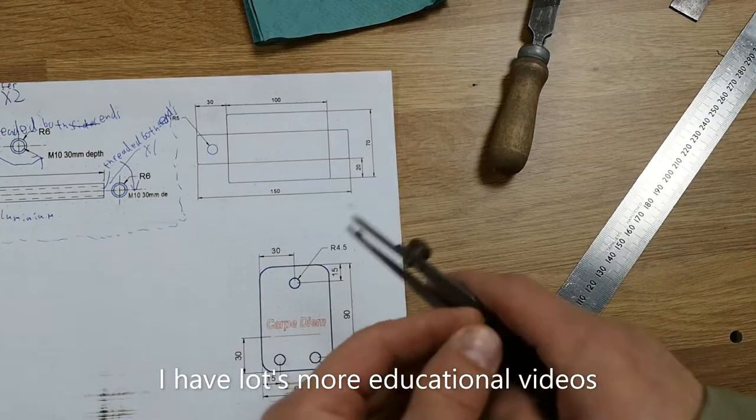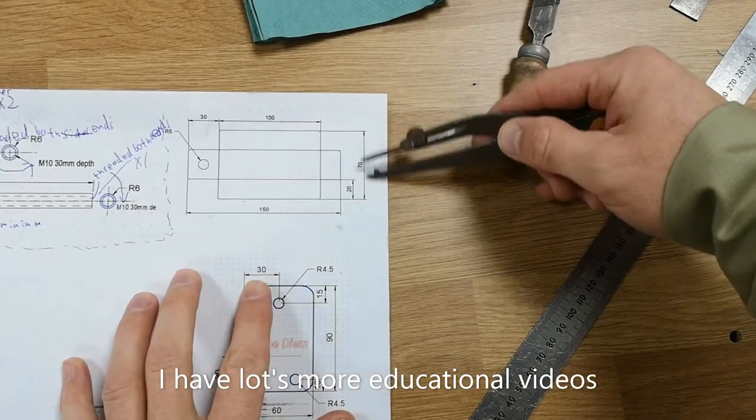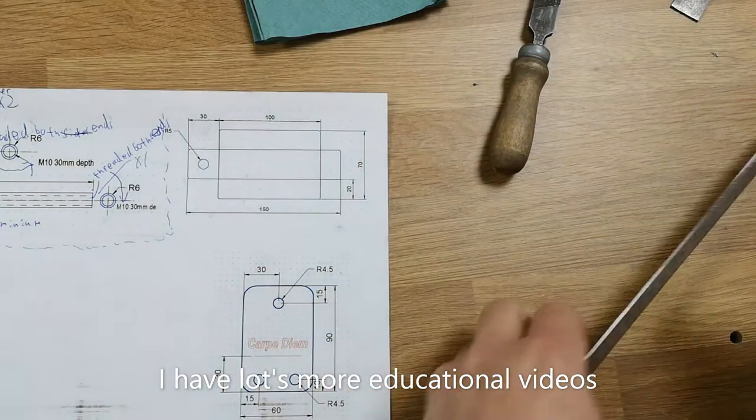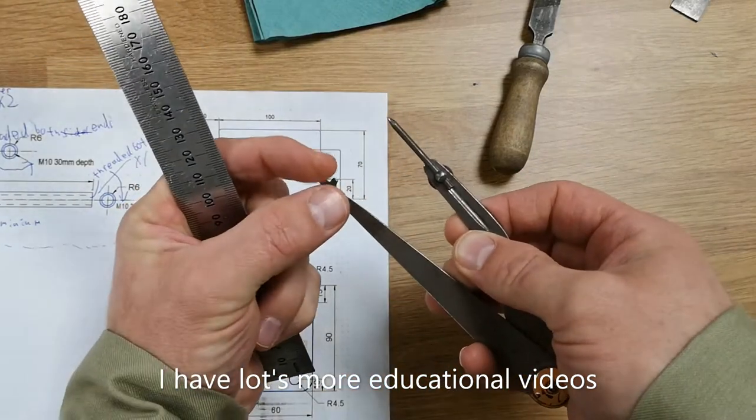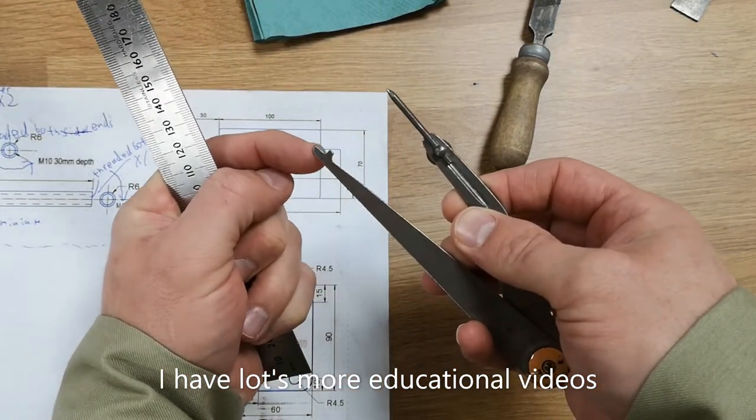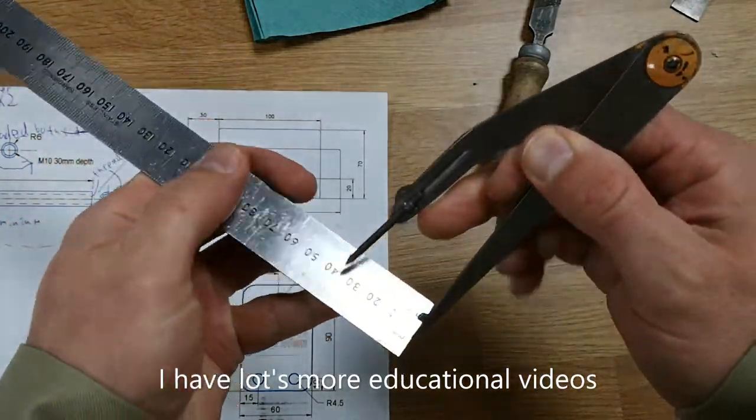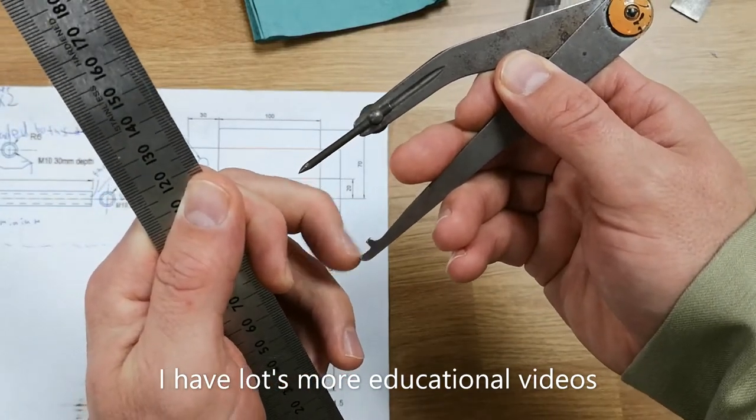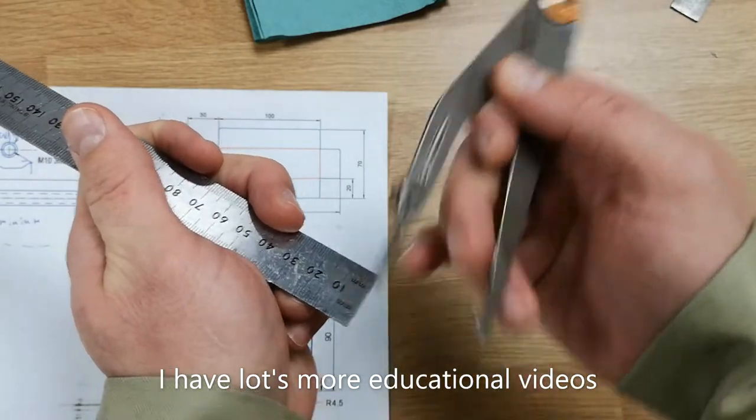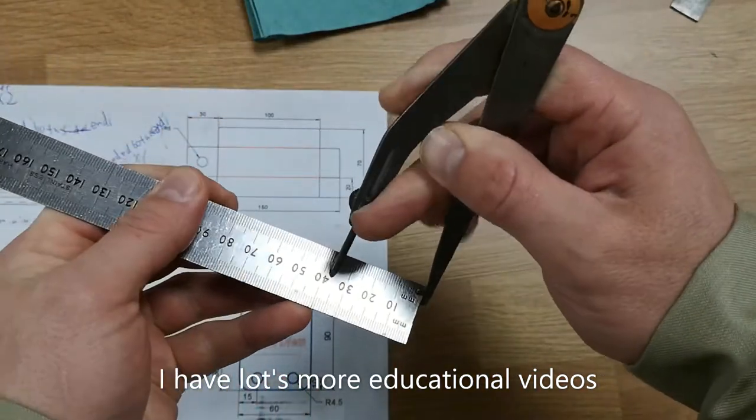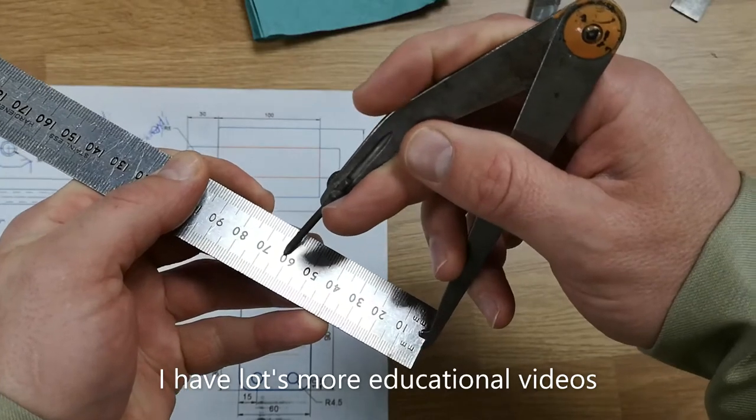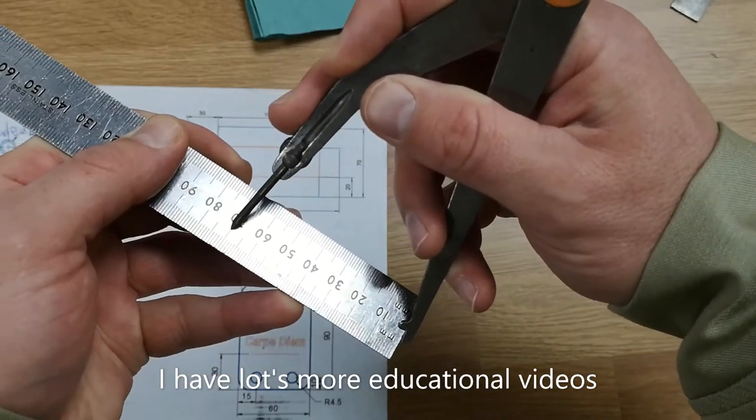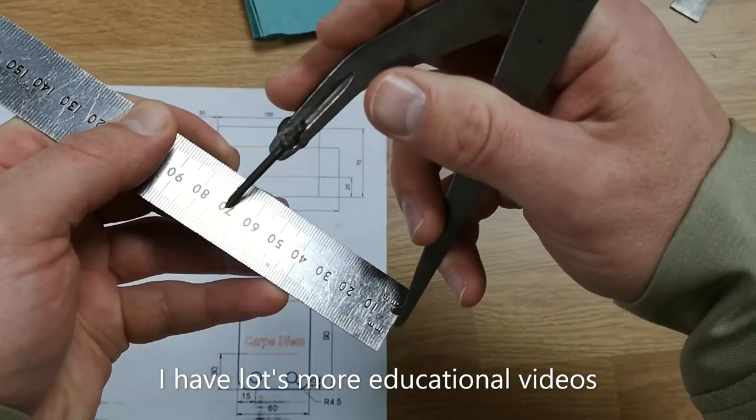So to use the odd leg caliper, what we have to do - the overall width of the lampshade, or of the net, is 70mm. So with this part of the odd leg caliper, where it's like a foot, that's going to go on the end of the steel ruler, and that will stop against the bumper of the ruler. So we can then adjust the scriber part of the odd leg caliper up to the 70mm dash on the steel ruler.